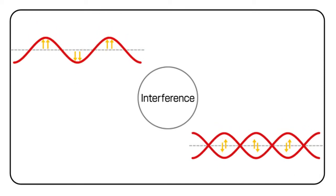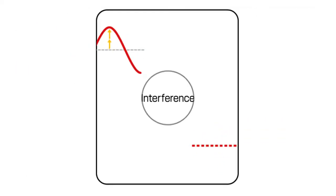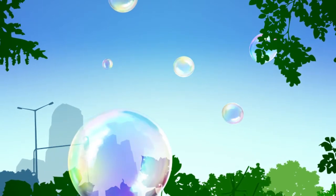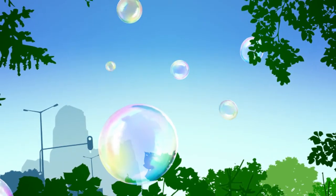This interference causes the colors contained in the light to be strengthened or weakened, creating the wondrous color cascade that you see in a soap bubble.